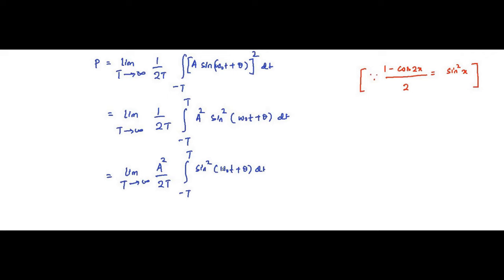So here sin²(ω₀t + θ): if we take x = ω₀t + θ, this becomes (1 − cos(2ω₀t + 2θ)) / 2 using the trigonometric identity sin²x = (1 − cos2x) / 2.